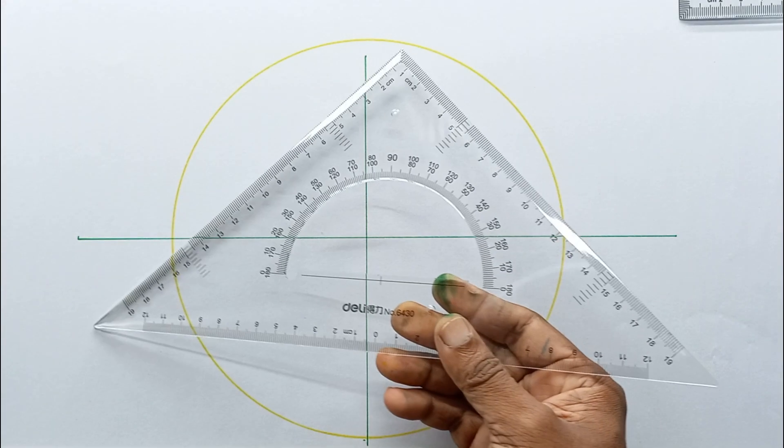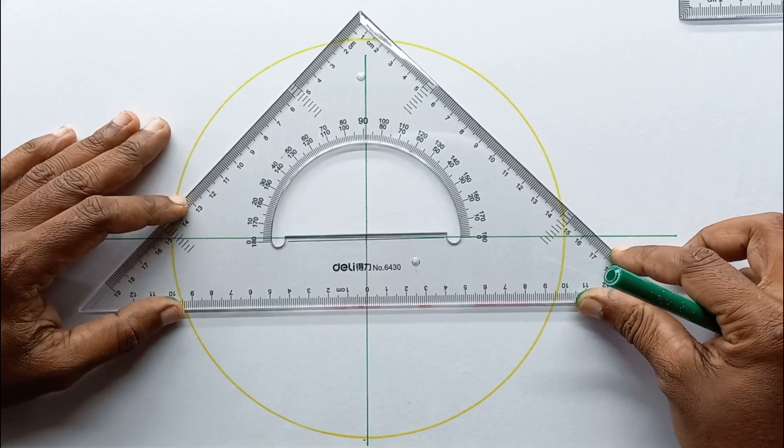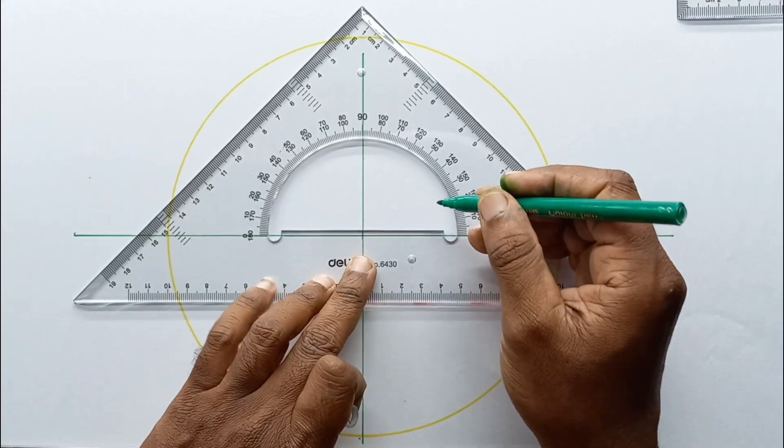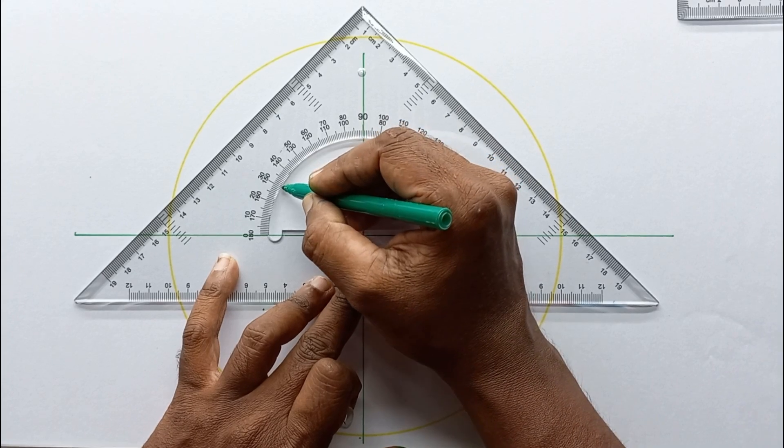Then this circle I am going to divide into 12 equal segments. So I am going to use the protractor to divide this circle into 12 equal segments.